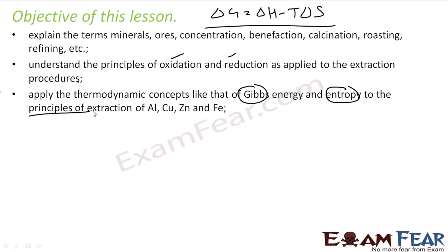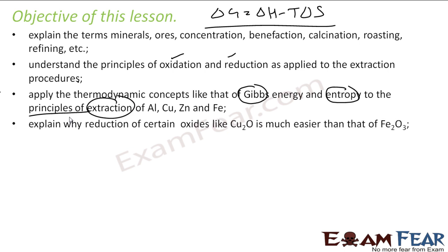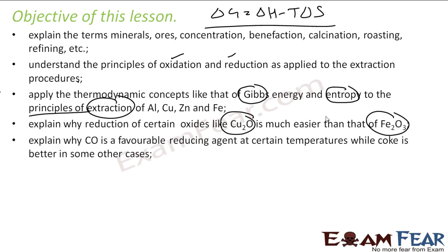These equations will apply in the extraction of metals. We will explain why the reduction of certain oxides is easier than others, and why CO is a very good reducing agent at certain temperatures while coke is a better reducing agent at other temperatures.